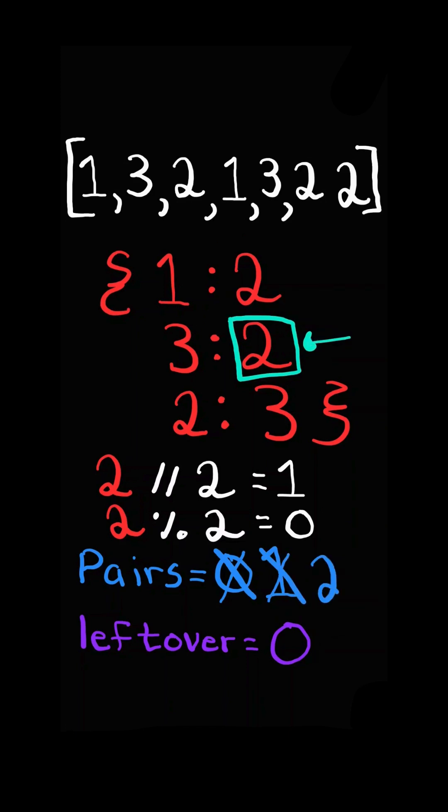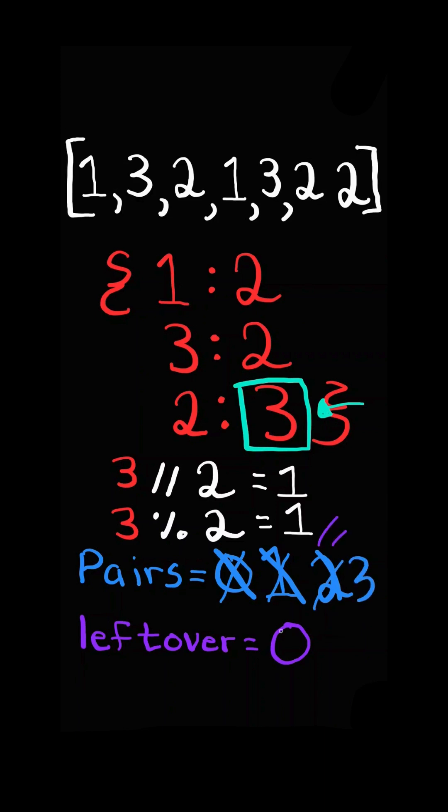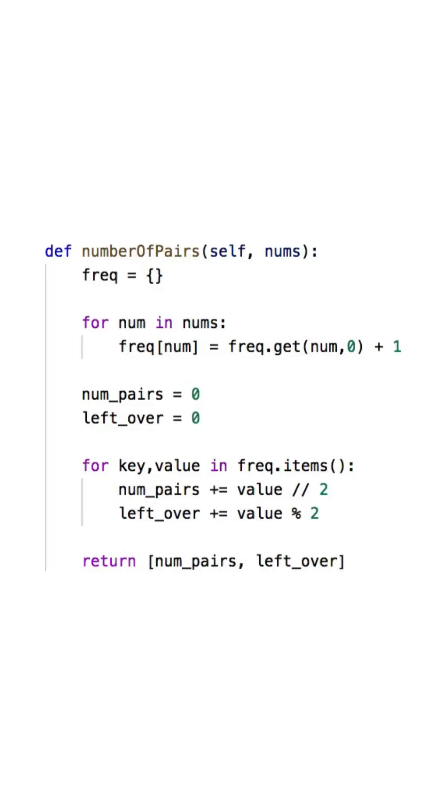We can create one more pair and zero leftovers and we continue. We can create one more pair and we will have one leftover. And here's the code to do so.